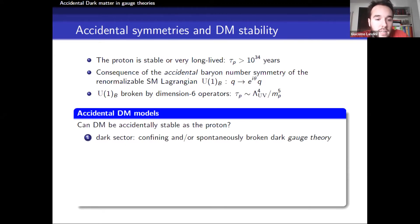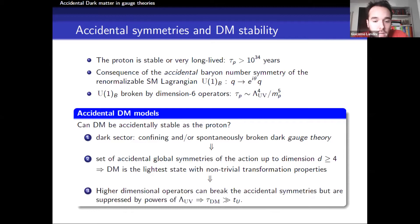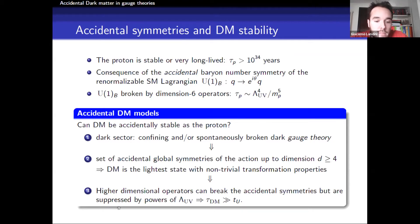The natural question we can ask is: can dark matter be an accidentally stable state? In general, the answer is yes. What we need is a dark sector — a confining or spontaneously broken dark gauge theory — such that gauge invariance naturally leads to a set of accidental global symmetries of the action, at least up to a certain dimension, so that the lightest state with non-trivial transformation properties under this symmetry is automatically stable and can be identified as the dark matter candidate. If higher-dimensional operators break the accidental symmetry, but only at sufficiently high dimension, dark matter is allowed to decay but with a rate highly suppressed by powers of the cutoff scale, so the dark matter lifetime can still be very long and satisfy experimental constraints.